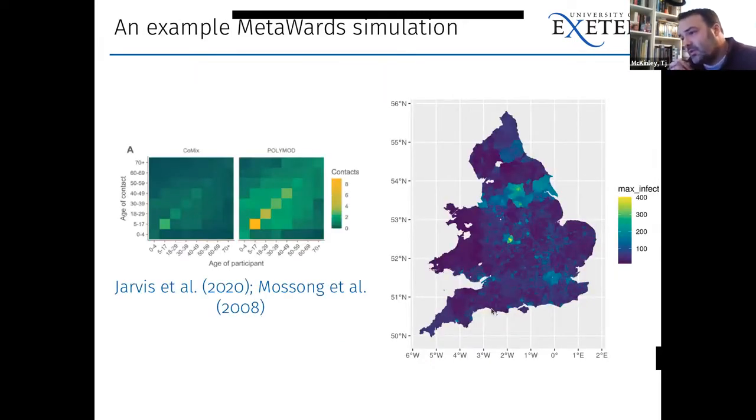Because we have age structure in the model, we have age categories, we also have age dependent transmission. So we use data from contact survey data, from things like polymod study, and more recently, the comic studies. These are data sources that give us some estimate of the contact rates between individuals in different age classes with other age classes. And so we can build this into the transmission potential. And this thing on the right hand side, don't worry about the actual numbers, this is just a simulation of the model, just really to show the spatial kind of structure of the model. And we're trying to calibrate this to things like deaths and potentially hospitalizations as well.